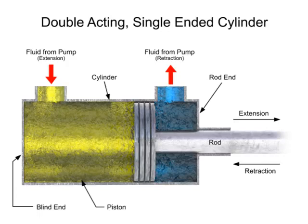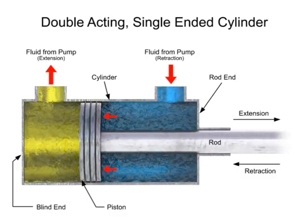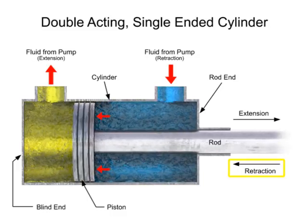When the directional control valve is shifted, it sends fluid into the rod end port, out of the blind end port, and back to the tank. Pressure builds up and generates a force on the other side of the piston, causing the retraction stroke.